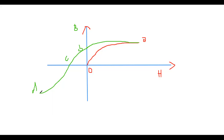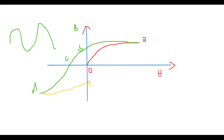Why are we reversing the polarity? We are considering the case when we have an alternating power supply. Hysteresis happens when we have an AC voltage or AC power source feeding the magnetic circuit. Because of the sinusoidal source, when the polarity of the current gets reversed, the curve takes another path — from D to E.